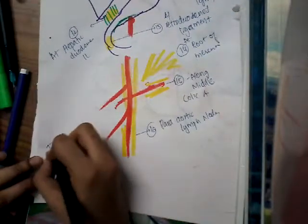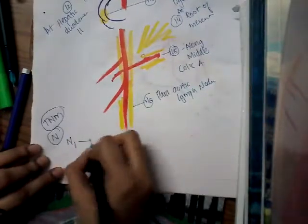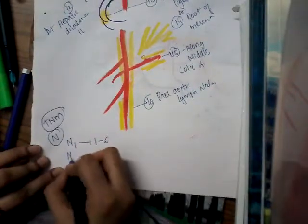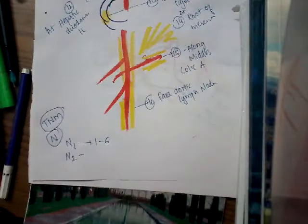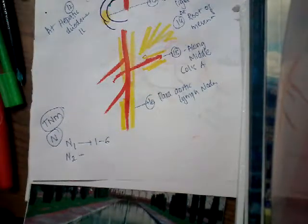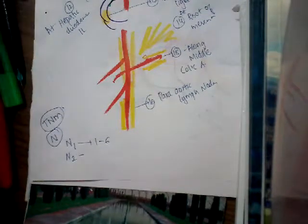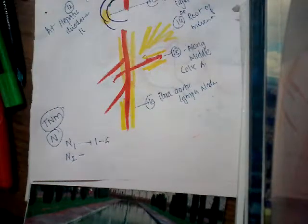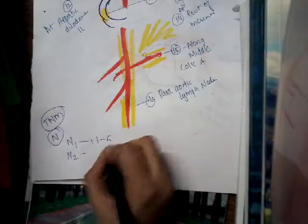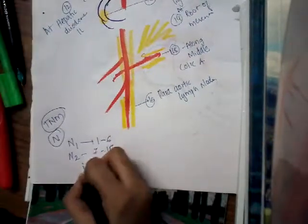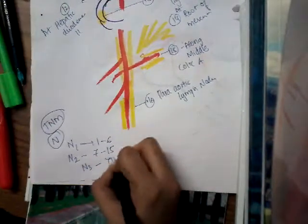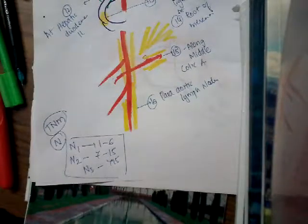In TNM classification, N1 corresponds to groups 1 to 6, N2 corresponds to groups 7 to 15, and N3 is more than 15 groups of lymph nodes.